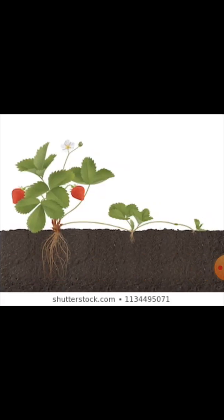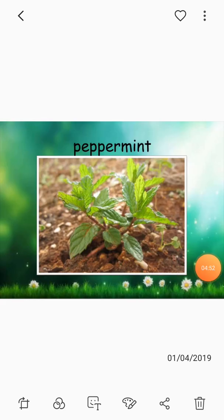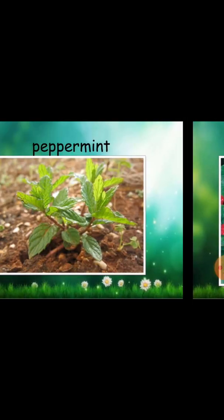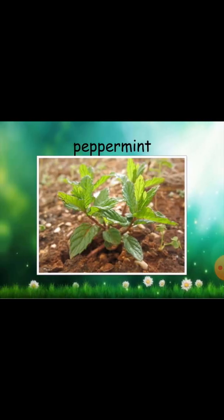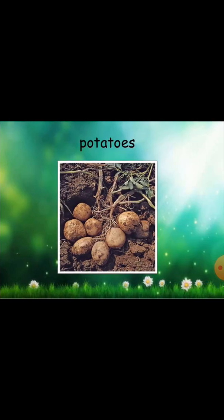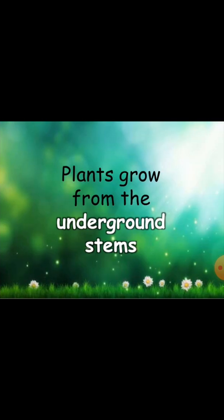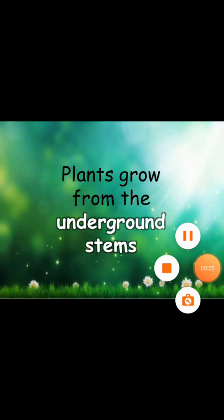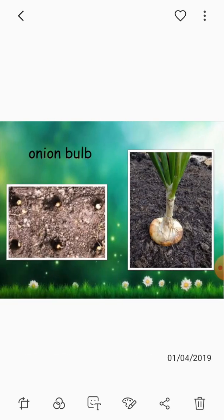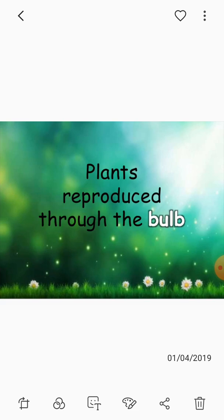Also, strawberry propagates in the same way. Bulbs in garlic, tulip, and also onion - these are plants that grow from the bulb, which is called reproduction by this method.